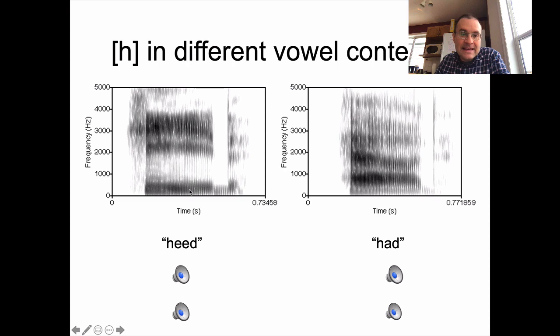So heed, E is a high front vowel. It's going to have a low F1, high F2. Had is a low front vowel. So we have a high F1 and a relatively high F2, even though it's still not quite as high as we get for E. Had.